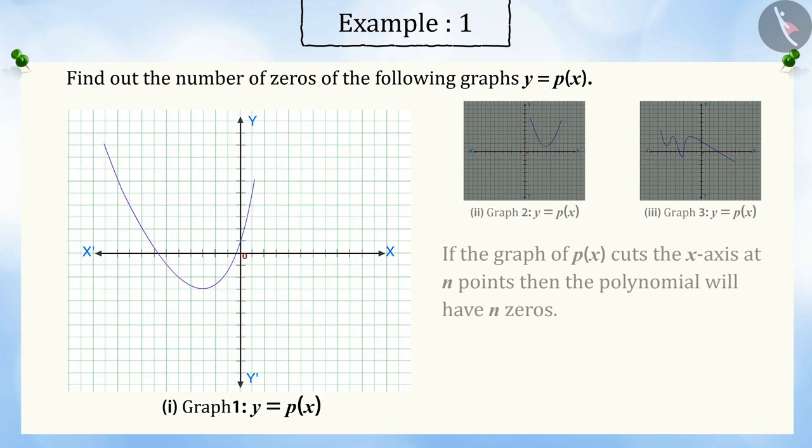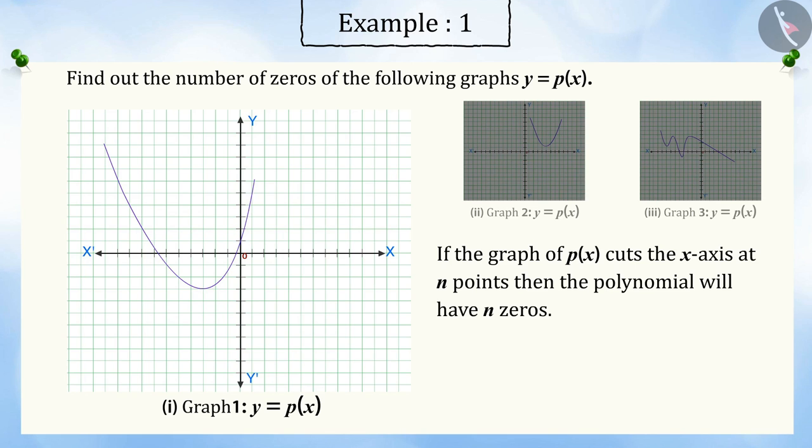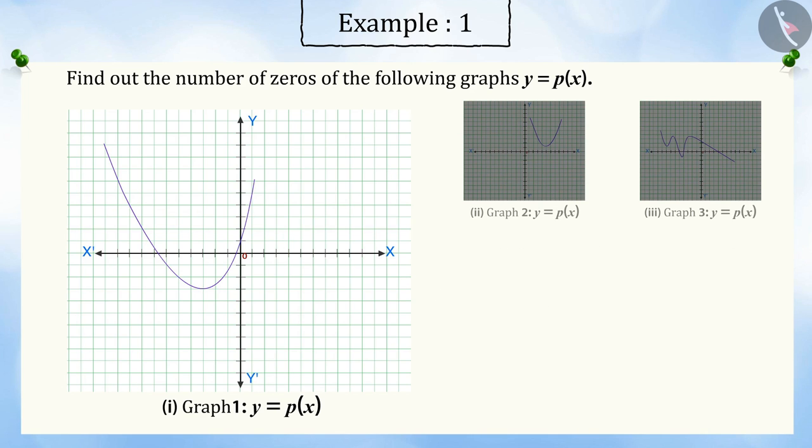Mohan remembers that if the graph of p(x) cuts the x-axis at n points, then the polynomial will have n zeros. Can you tell the number of times this graph intersects the x-axis? Correct! This graph intersects the x-axis at two points. Hence, the number of zeros would also be two.